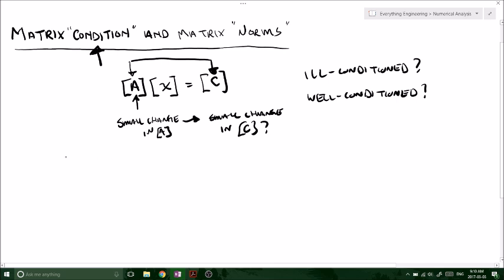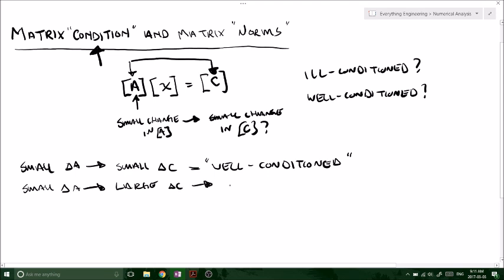If we get a small change in A and that results in a small change in c, we can say that it is well-conditioned. Similarly, if we make a small change in A but we get a large change in c, then we have an ill-conditioned matrix.